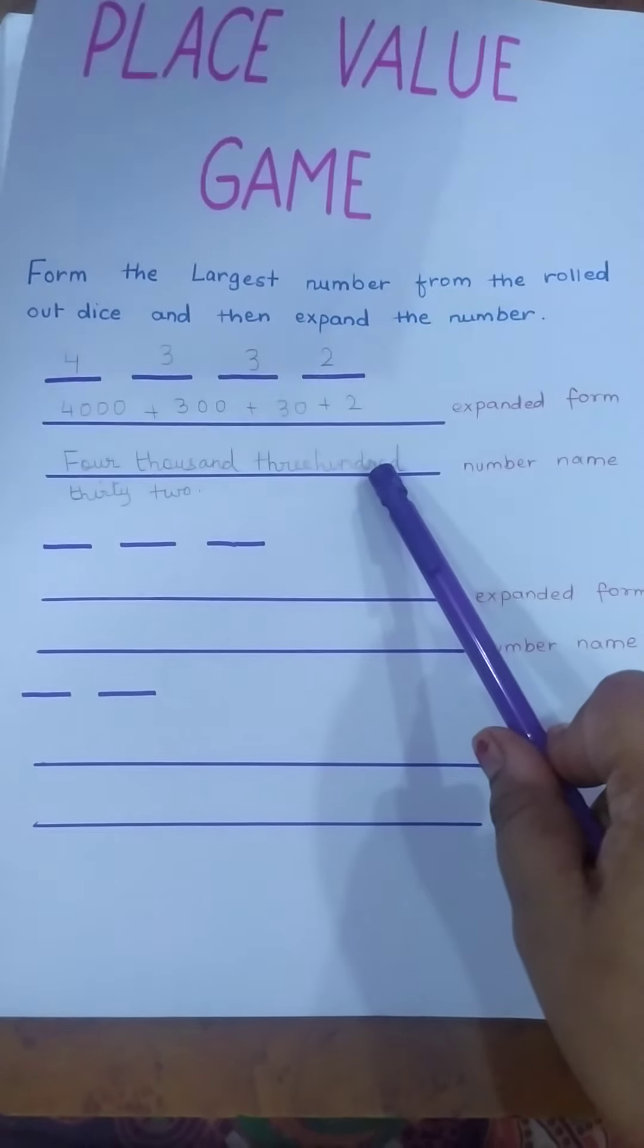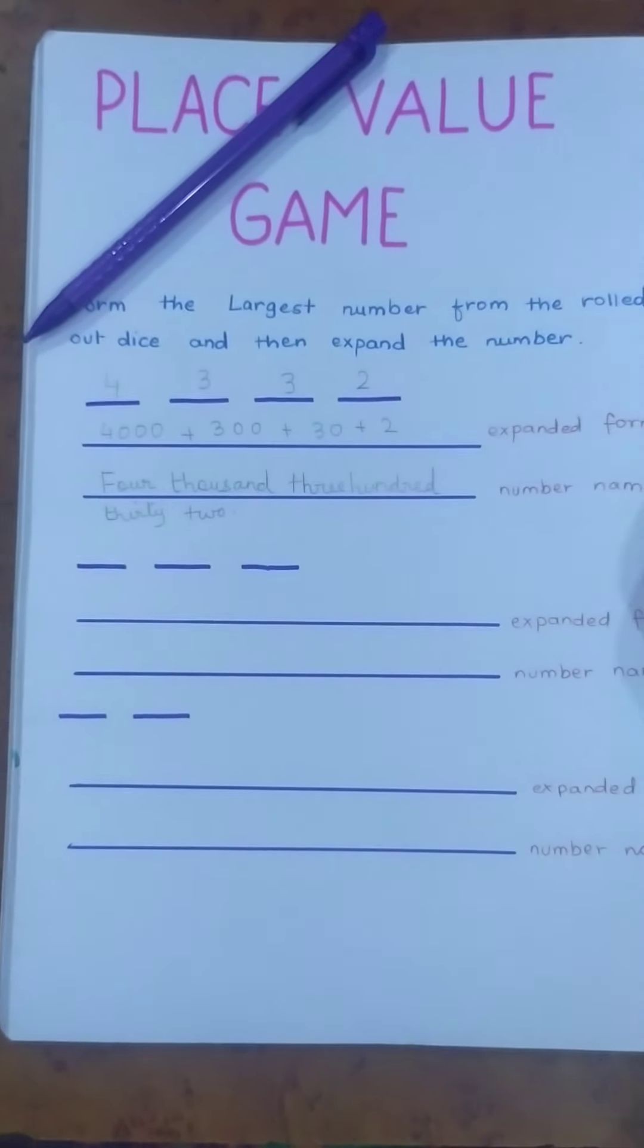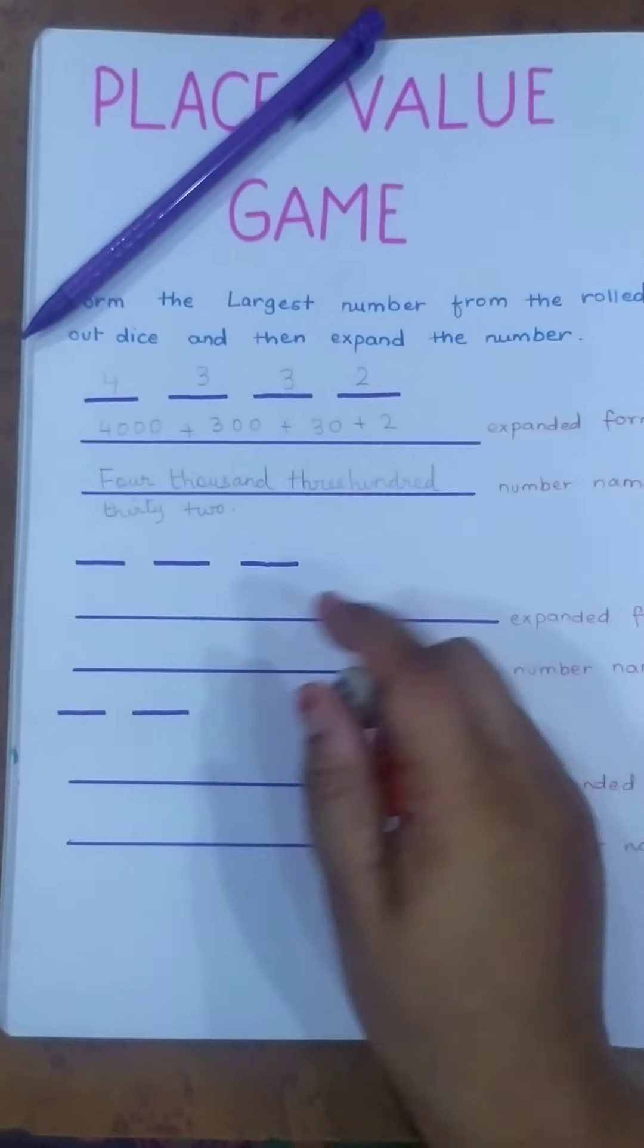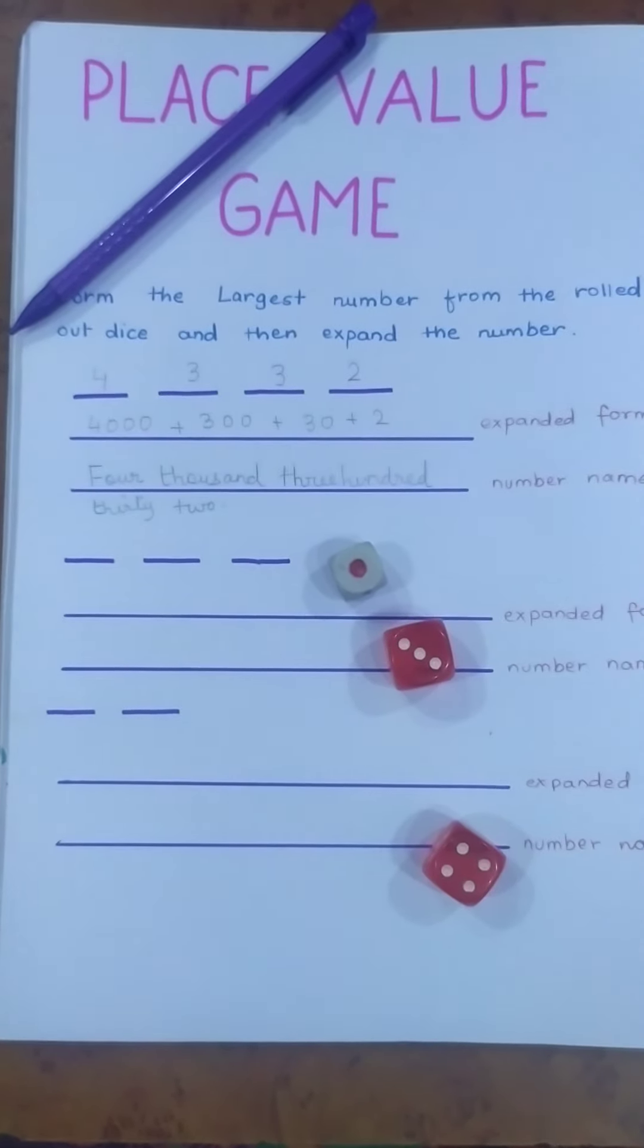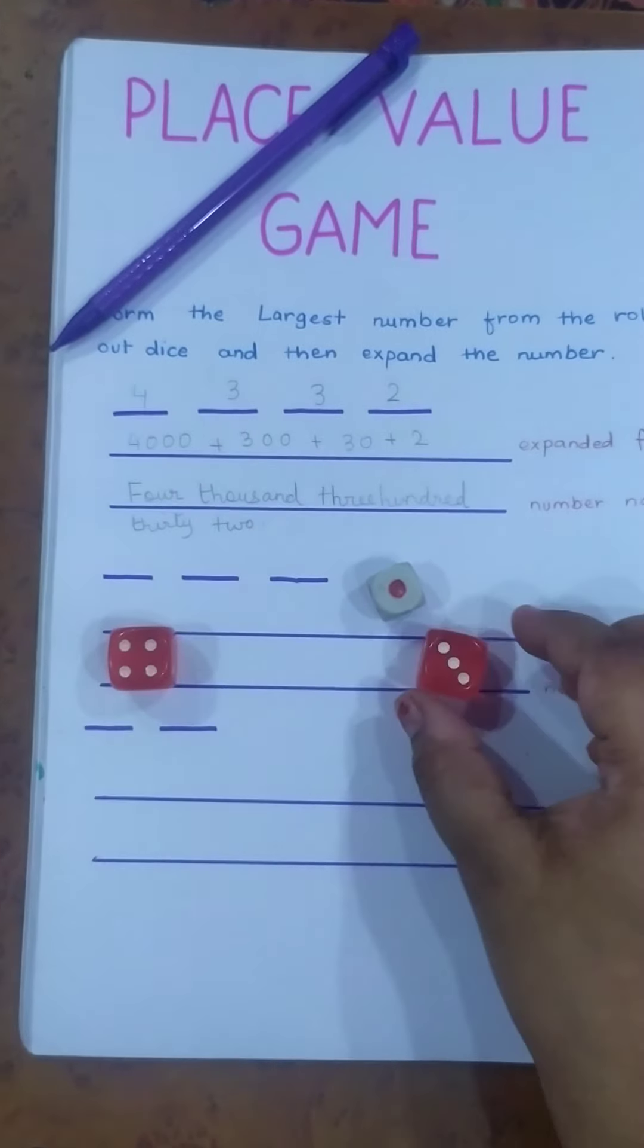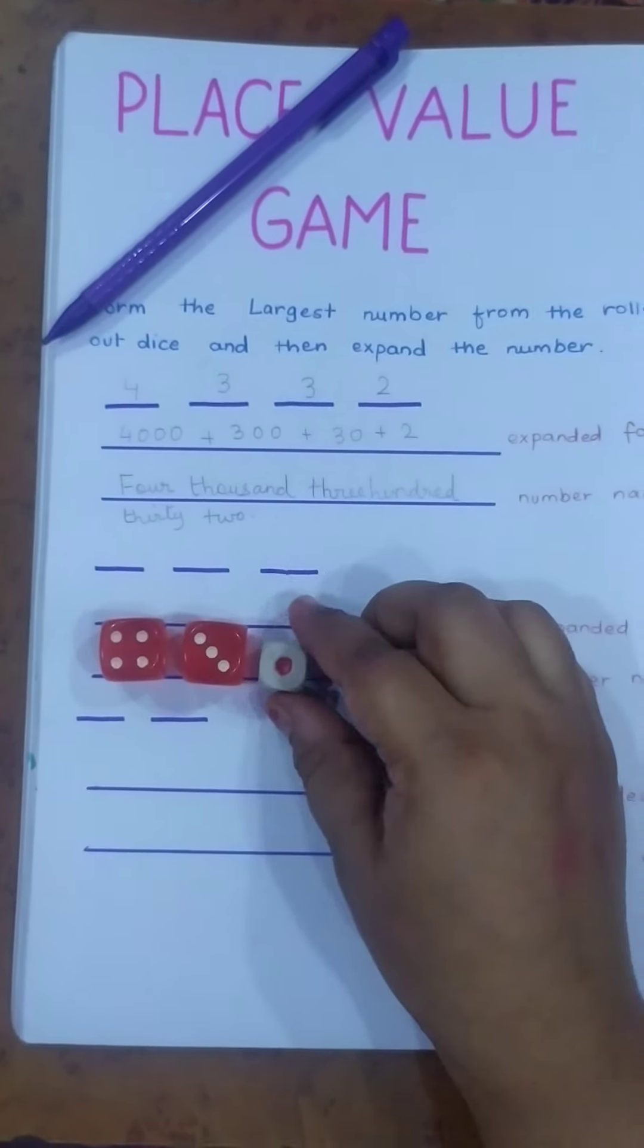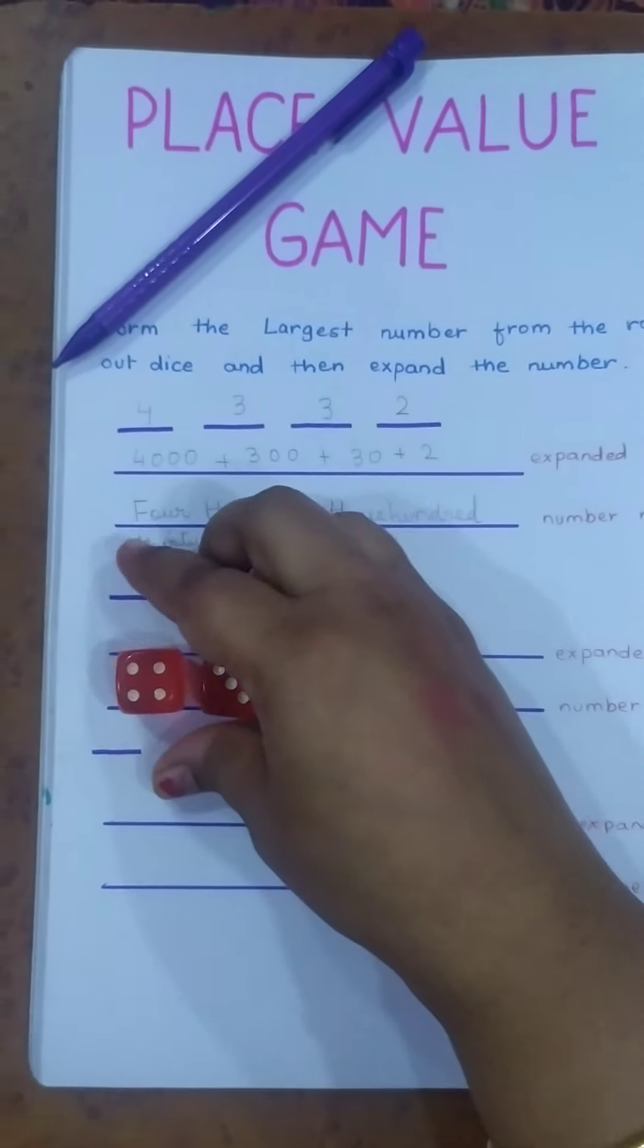Now let us do the next one. This time I have to use only three dice. So I have my three dice ready. These are my numbers. Again I will arrange. So it's 431. This is the largest three-digit number that I can make using this.